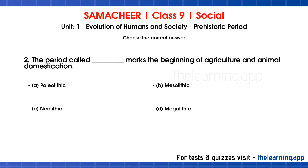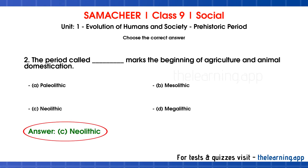Second question: the period called dash marks the beginning of agriculture and animal domestication. Options are A) Paleolithic, B) Mesolithic, C) Neolithic, D) Megalithic. The correct answer is Option C, Neolithic.